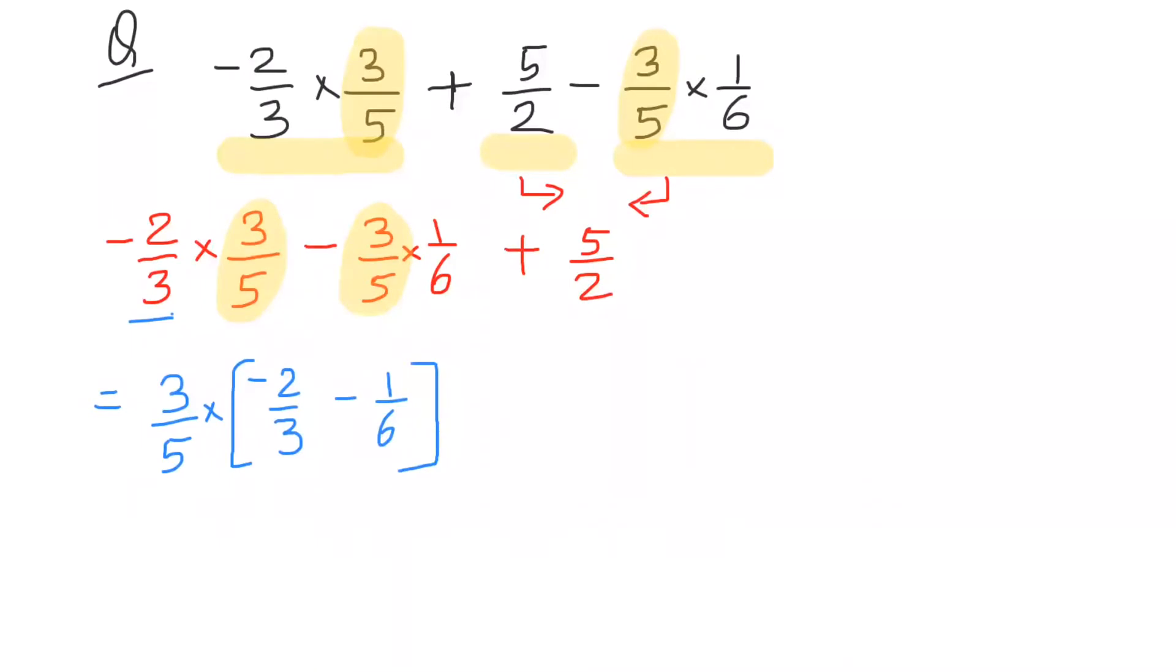And the last number as it is. Now simplify the brackets. Within the bracket you have to take LCM - it's three and six, so LCM will be six. So multiply this by two and you will get negative four minus one upon six.